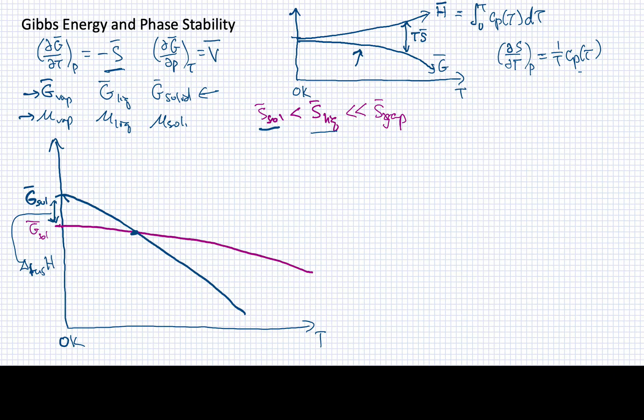All right. Now, what about the vapor? I'm going to draw that one in red to distinguish it. So the vapor is going to start higher still. So this is the molar Gibbs energy of the vapor. Once again, I have a gap here. This gap is going to be related to the delta vaporization of the enthalpy.